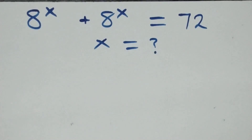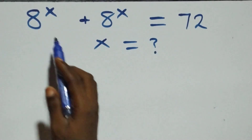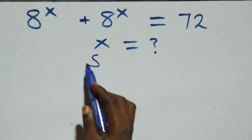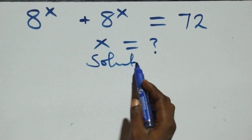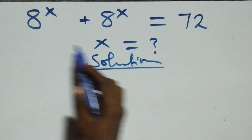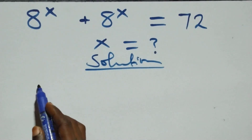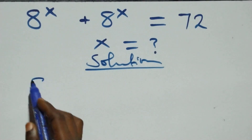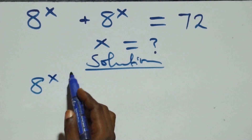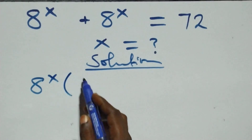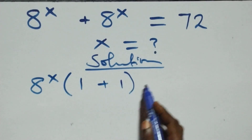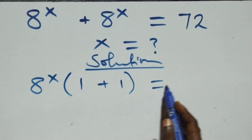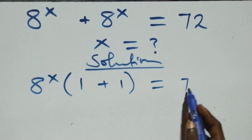Hello, you're welcome. How to solve this nice exponential equation. What we have here, we factor a raised to power x out, that is a raised to power x, into bracket one plus one, left inside, which equals 72.